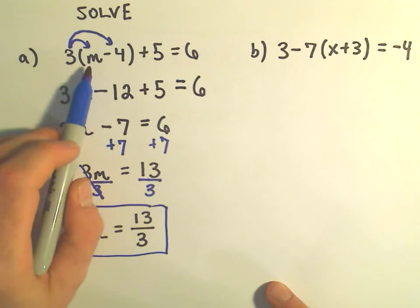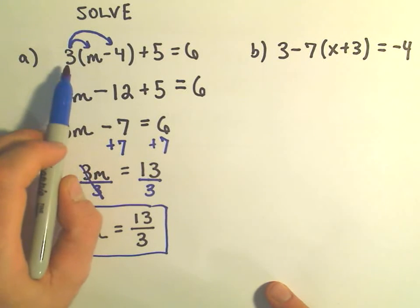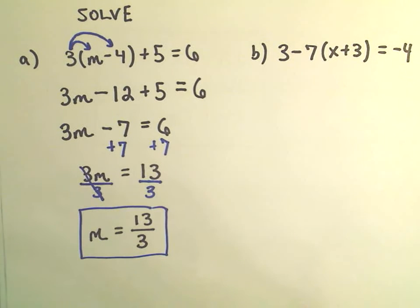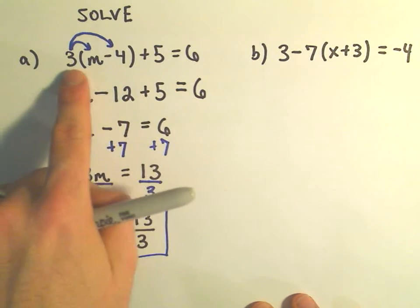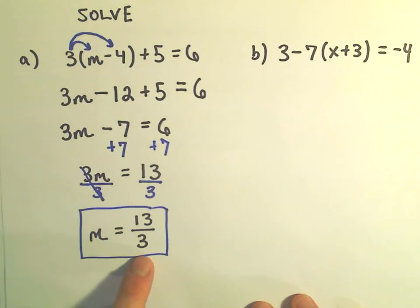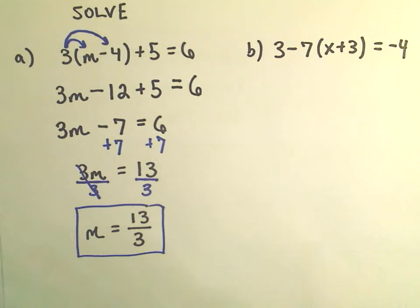And you can check that if you plug 13 over 3 onto the left side, if you subtract 4, multiply that by 3, and then add 5 to it, you'll get the number 6 out. And I think this illustrates why it's important to have this procedure, because I certainly couldn't, this is not a very complicated linear equation, but I certainly wouldn't guess 13 over 3 at a glance, so again procedure, procedure, procedure.